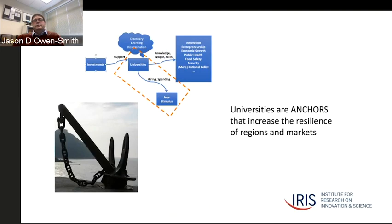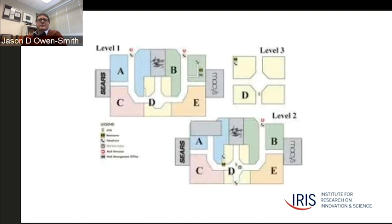One argument is that large research institutions—and in fact any higher education institution—have the effect of making the communities and regions that they inhabit more resilient. The University of Michigan is unlikely to go out of business anytime soon, and more importantly, it's unlikely to pick up and move to Alabama or Texas or Singapore, which in my part of the country is not true of almost any other major employer. Universities and colleges represent a kind of permanent endowment in their region, and in that sense they serve as anchors.